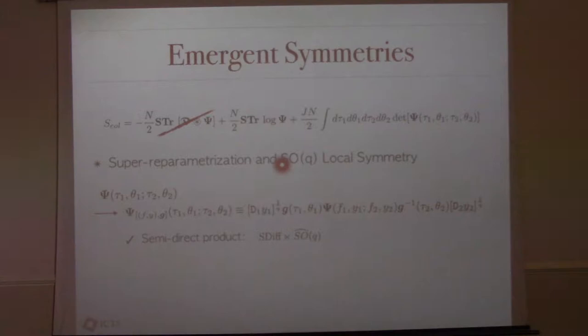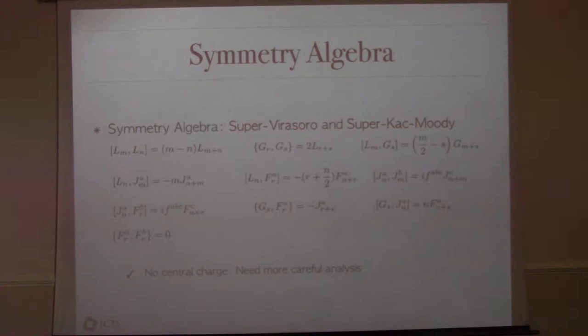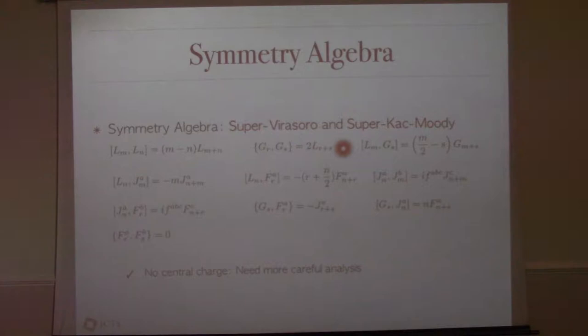Together with the super reparametrization, our collective action is invariant under the semi-direct product of super reparametrization and local SO(Q). It is a semi-direct product because the SO(Q) matrix G depends on tau and theta, so the two transformations do not commute. Working out the symmetry algebra, one finds it is the super Virasoro and super Kac-Moody algebra. The central extension (anomaly) would require more careful analysis which we did not perform.